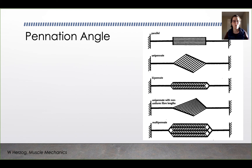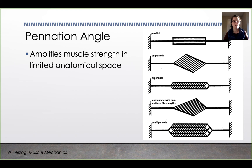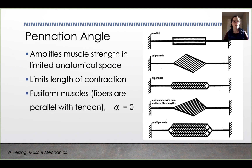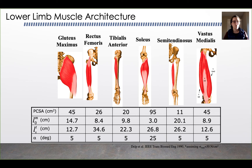Fiber arrangements include parallel, unipennate, bipennate, unipennate with non-uniform fiber lengths, and multi-pennate. The advantage of pennation is that it amplifies muscle strength in a limited anatomical space, but it does limit the length of contraction and range of motion. Fusiform muscles have fibers parallel to the tendon with alpha equal to zero. Most muscles in the lower leg have a pennation angle of about five degrees. Pennate muscles have low fiber length-to-muscle length ratios and are good for force production, while longitudinal muscles have higher ratios and are good for large excursions and velocities.